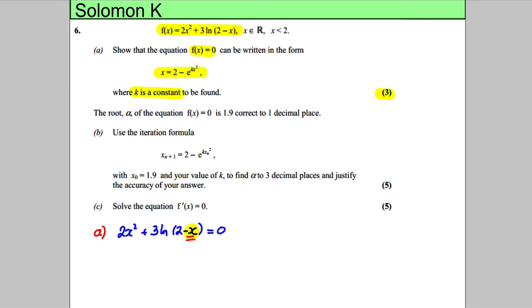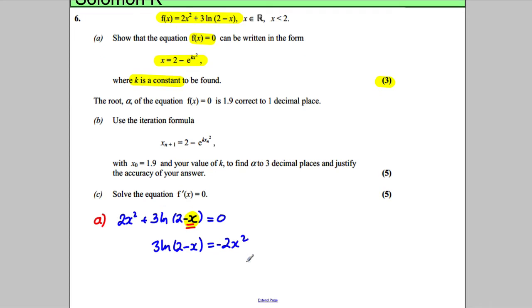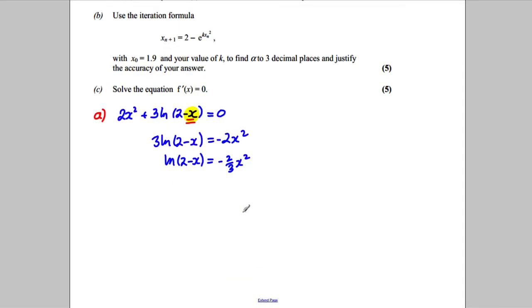So I'm going to subtract 2x² from both sides, giving 3·ln(2 − x) = −2x². Then I'm going to divide both sides by 3, so ln(2 − x) = −(2/3)x².